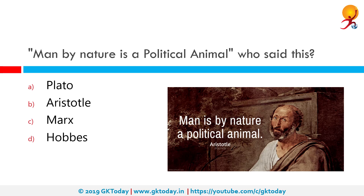"Man by nature is a political animal." Who said this? The correct answer is Aristotle. The statement can be taken in a number of ways — it can mean that man is naturally sociable, or it might also mean that man is someone who may resort to violence or threats for self-preservation.